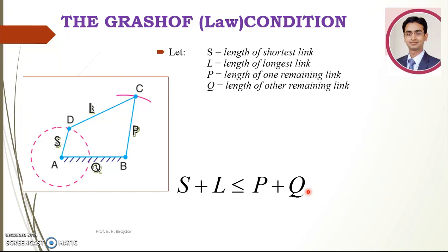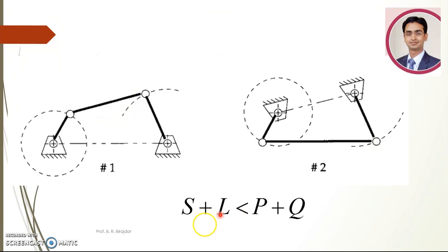Now why does this Grashof's condition need to be satisfied? We will see the first case when S plus L is less than P plus Q. In figure 1, here the link is fixed as the frame, this is the crank, this is the follower, and this is the coupler. Now when it satisfies S plus L less than P plus Q, at least one of the links will get rotary motion and the other will just oscillate.